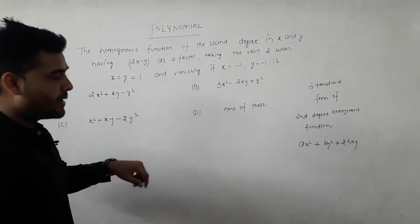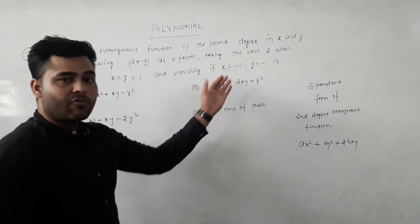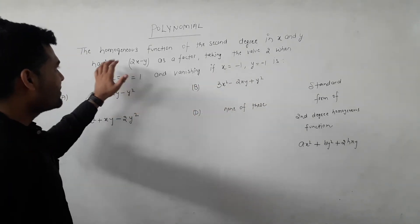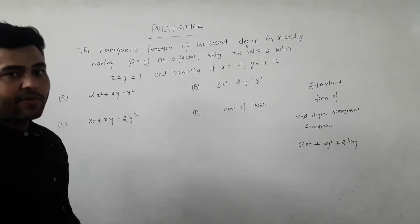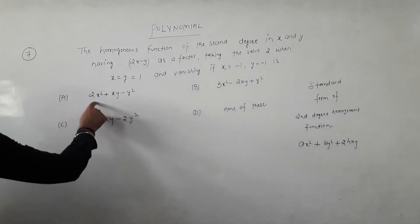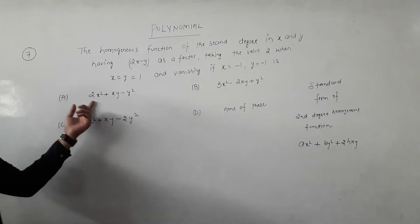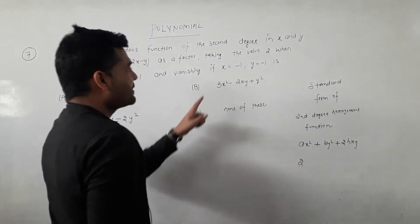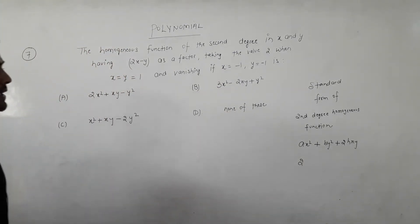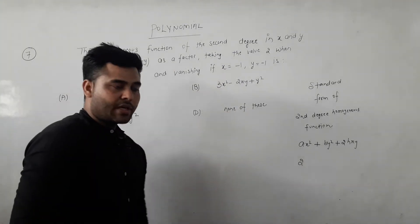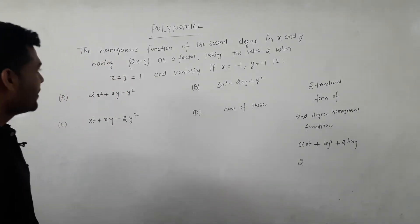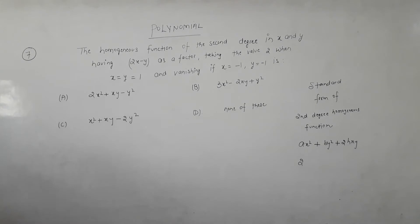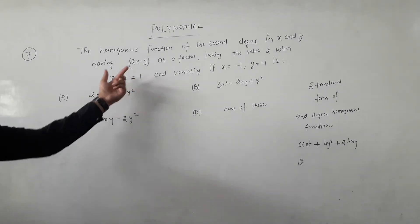Since 2x minus y is a factor, this value will satisfy the function. So if we divide and check, this factor must divide the expression. The condition to check: 2x minus y is a factor means the expression equals zero when y equals 2x.